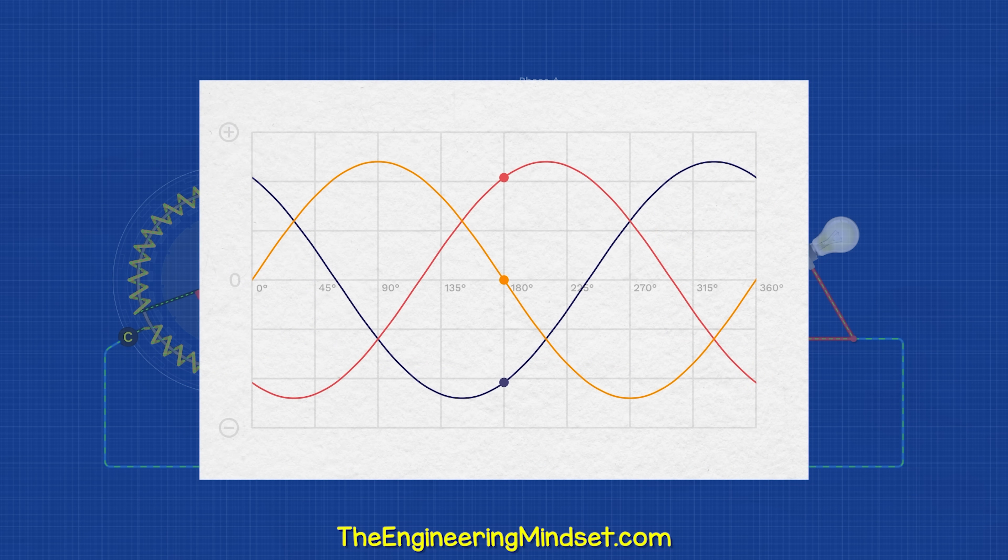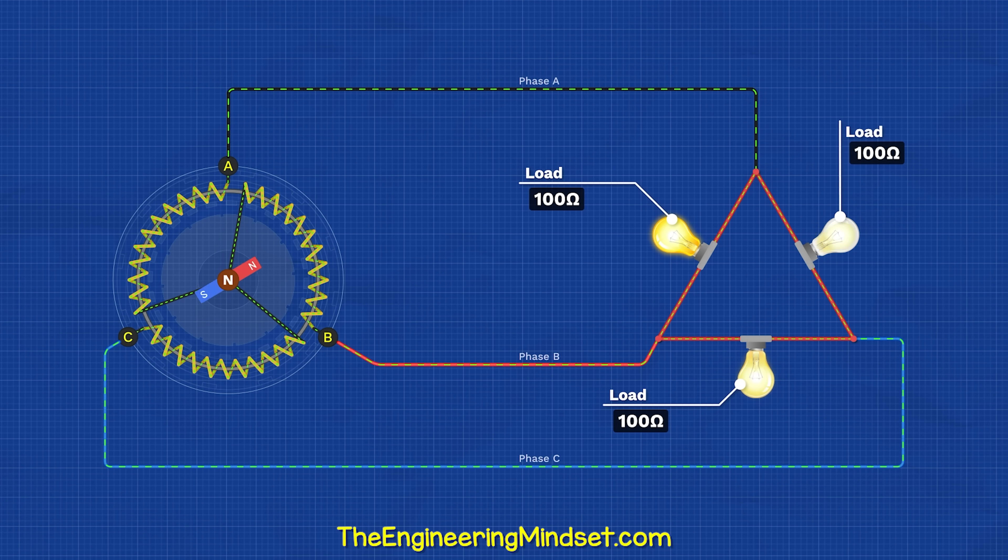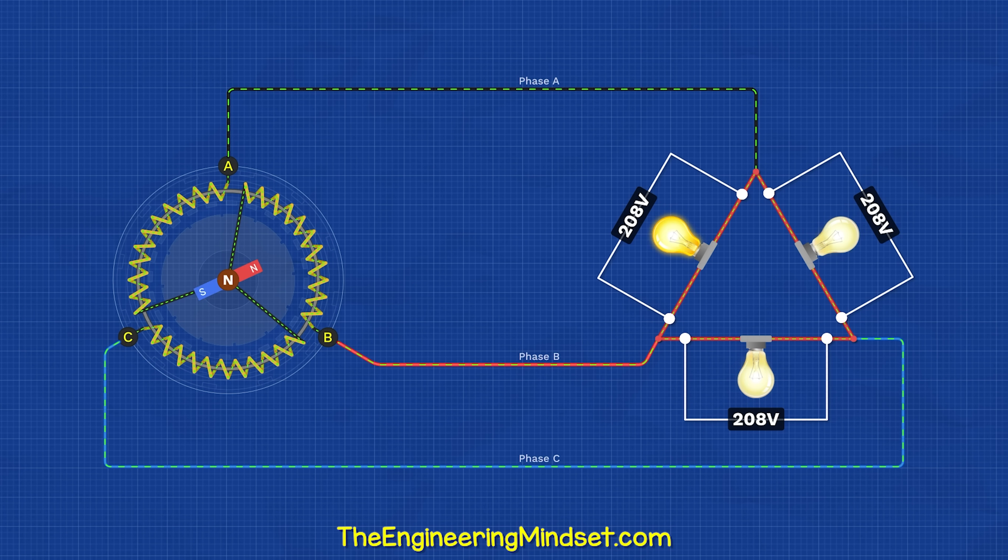We can see on the three phase current waveform, at for example 180 degrees, phase A has zero amps flowing, phase B has positive current and phase C has equal negative current flowing. This works great for equal three phase loads, but with this design we can only connect across two phases, so the voltage will be very high.